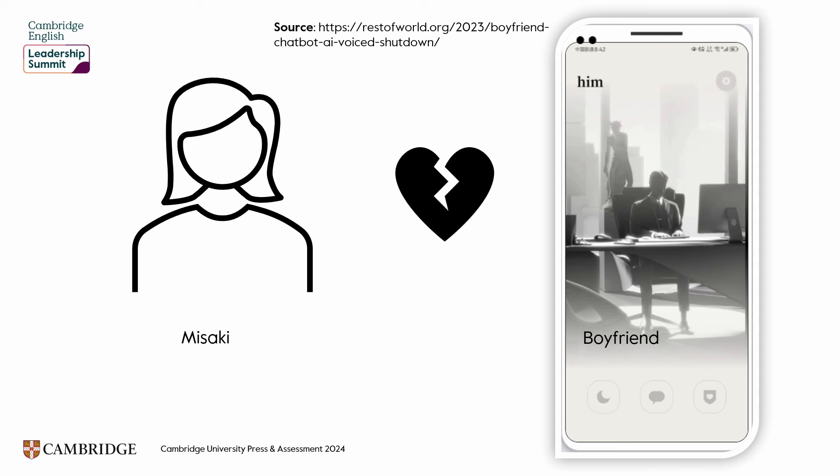And then one day, Misaki woke up and the boyfriend was gone. She was absolutely devastated. What had happened? Basically, the company that had produced the app, which was called HIM, had closed the app. So he wasn't a real boyfriend at all — he was an AI chatbot. And some people would probably think that sounds like quite a nice relationship. You never actually have to pick those dirty socks off the floor or listen to the snoring. But Misaki and thousands of women all over Asia were absolutely devastated when the app was closed. There was no explanation from the company — the app was pulled, and that was the end of the relationship.